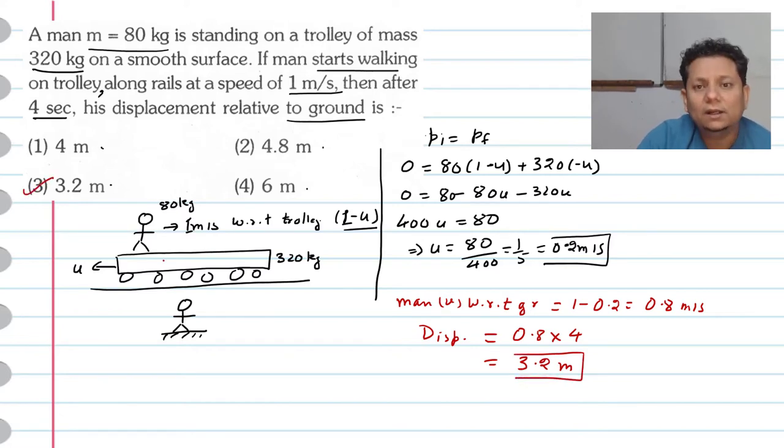With respect to ground, the man travels 3.2 meters. With respect to the trolley, the man feels like he walked 4 meters, but the trolley moved backward, so actually he traveled 3.2 meters. Hence option number 3 would be the right answer. I hope the solution is clear.